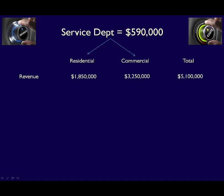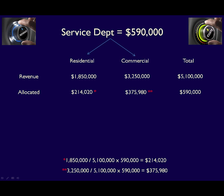Total revenue is $1,850,000 plus $3,250,000, which equals $5,100,000. To allocate service department overhead to Residential: $1,850,000 divided by $5,100,000, multiplied by $590,000, gives an allocation of $214,020. For Commercial: $3,250,000 divided by $5,100,000, multiplied by $590,000, gives an allocation of $375,980.